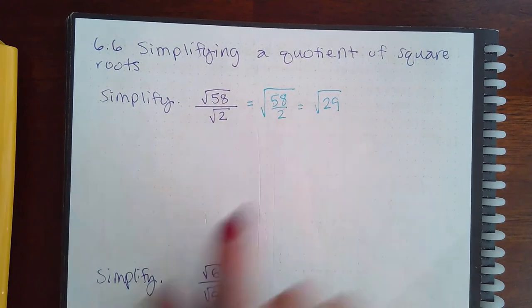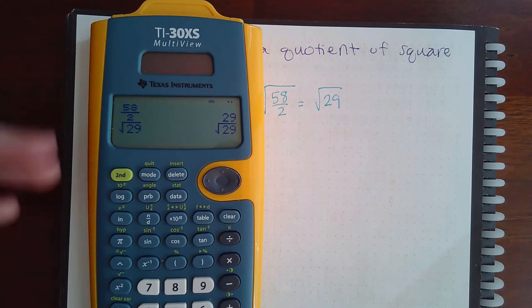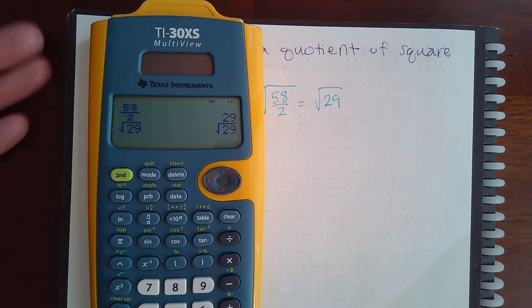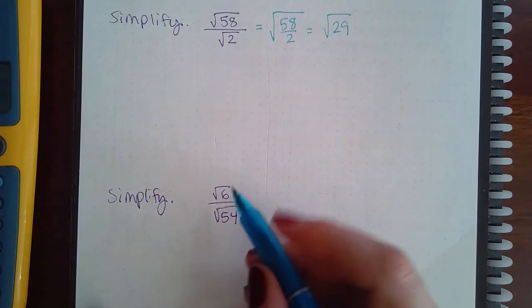If you try to verify that in your calculator, it just gives you back square root of 29 because it cannot be simplified. So let's go ahead and move on to this one.